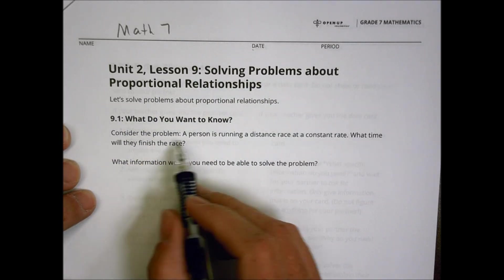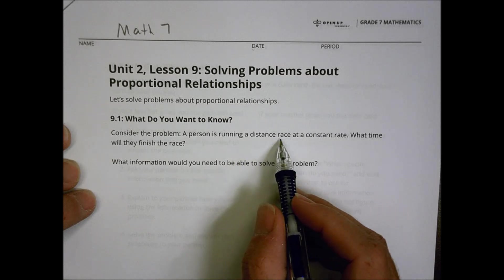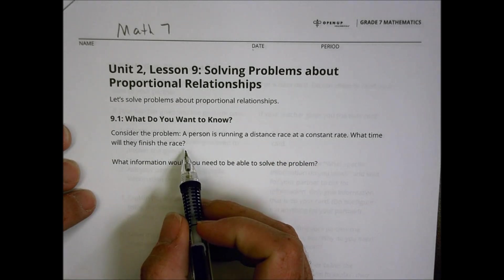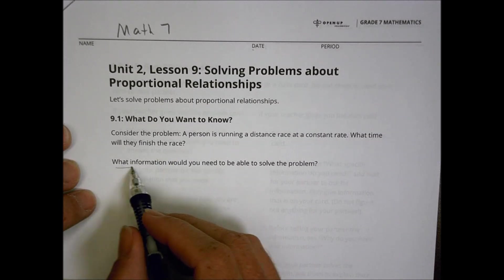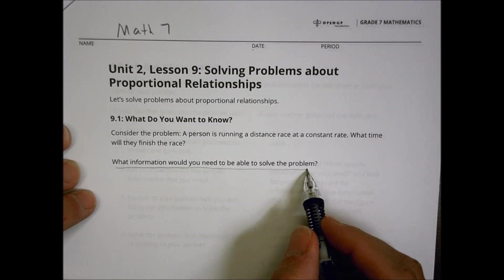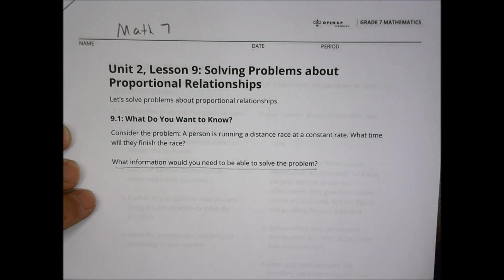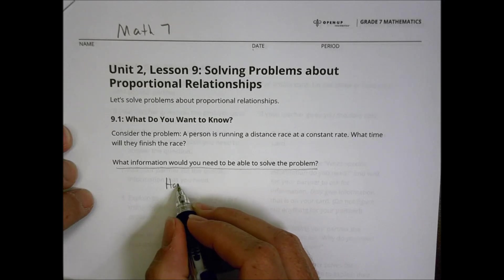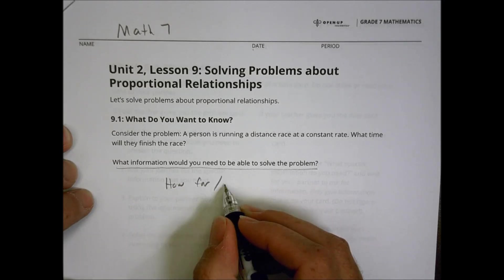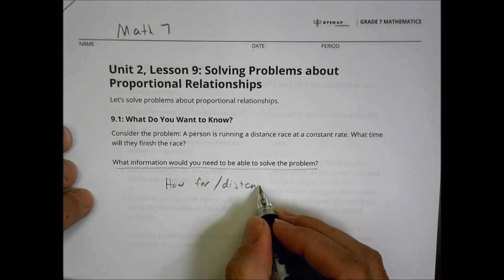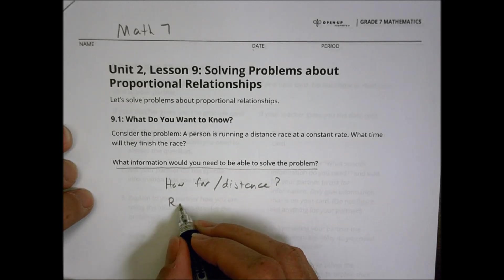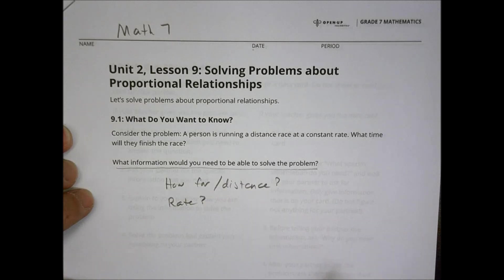What do you know? Consider the problem: a person is running a distance race at a constant rate. What time will they finish the race? There are lots of things you might need to know to figure that out — perhaps how long the race is, or what the distance is going to be. It might be helpful to know the rate at which they run. How fast are they running? Are they a slow runner or a fast runner?